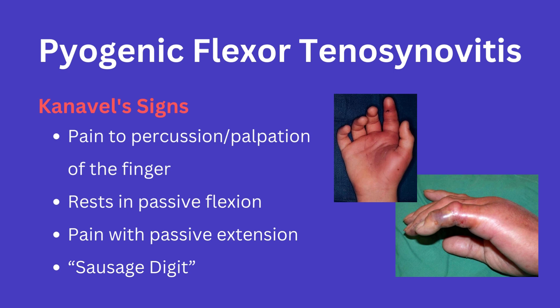This closed space infection can lead to acute findings called Kanavel signs, which you should definitely know and be able to rattle off to your resident. The Kanavel signs are: pain to percussion or palpation of the finger; the finger will rest in passive flexion and thus will have pain with passive extension; and finally, the finger is a so-called sausage digit with swelling along the length of the finger.